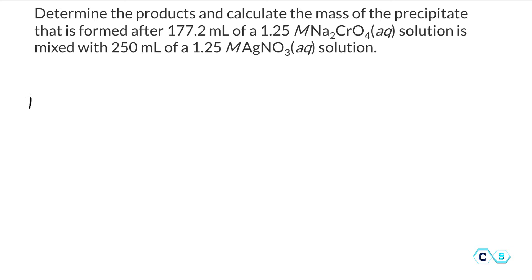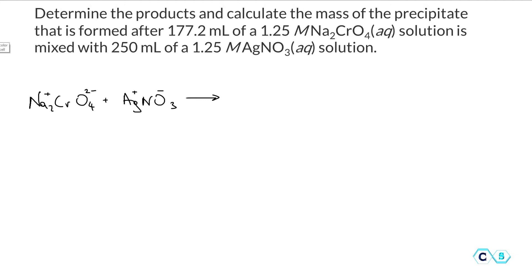Writing sodium chromate reacting with silver nitrate, we can predict the products by marking down the charges for each ion: sodium ion has a charge of plus one, chromate has minus two, silver plus one, and nitrate is one minus. To predict the products, we combine the cation of one reactant with the anion of the other reactant.